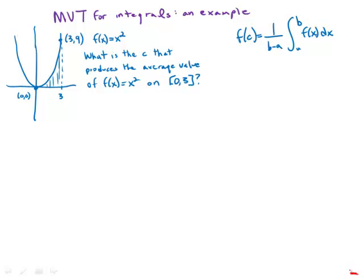So the first thing you have to do is just figure out that average value. So f of c equals 1 over b minus a, which here is just 3, integral from 0 to 3 of x squared dx.